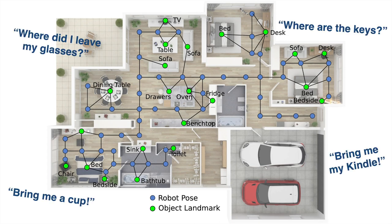Notice, however, that the objects we are interested in finding, such as the keys or an ebook reader, are not going to appear in these graph maps. The map will contain static objects, whereas we are interested in finding non-static objects. The distinction between these two object types is going to be important for the rest of the talk.